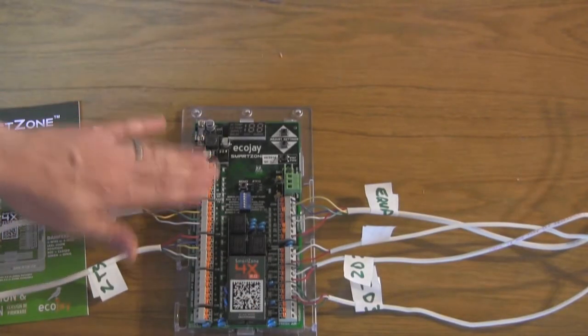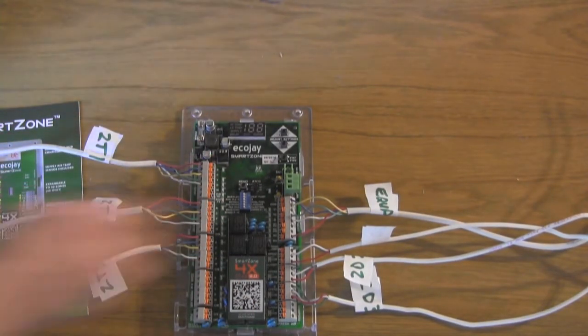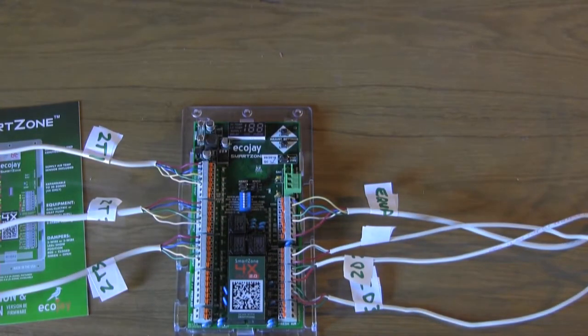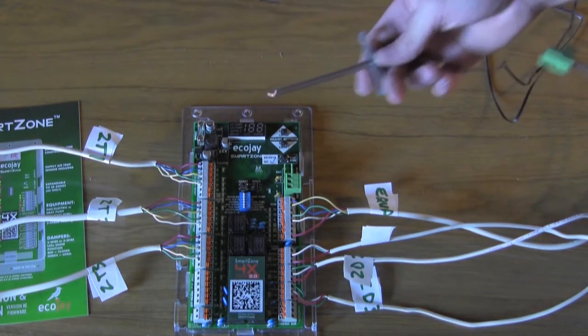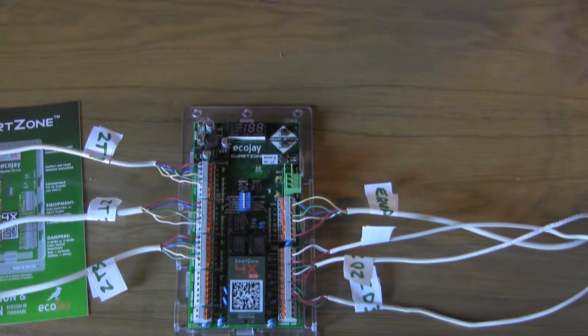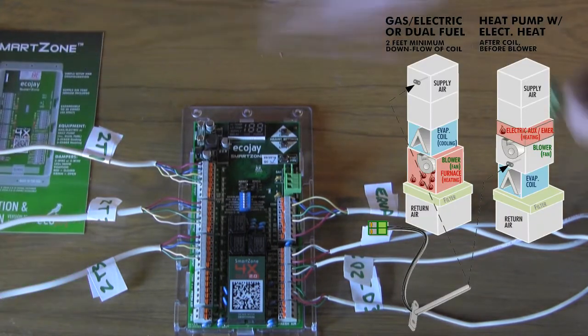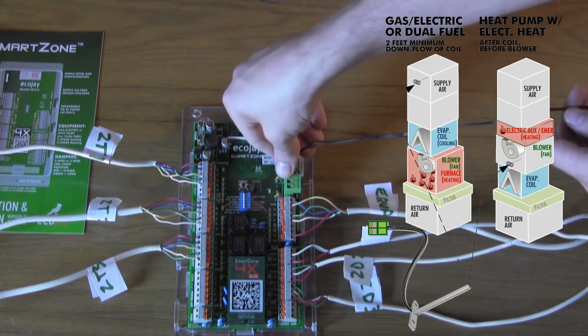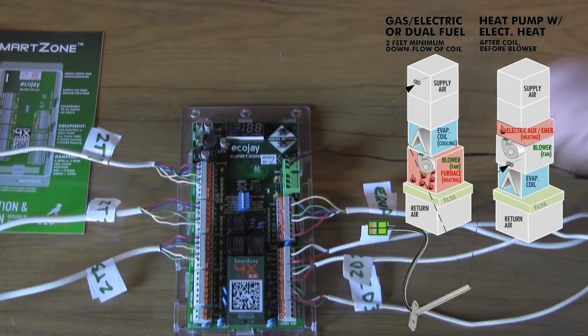Once all the thermostat wires are connected and all of the damper wires and equipment wires are connected, before we plug in power, we will make sure and use the temperature sensor wire that should be plugged into the plenum as shown in the instruction manual. And the sensor wire has a plug-in connector and will plug in just like that.